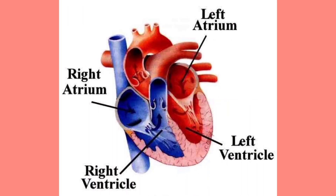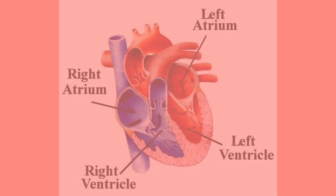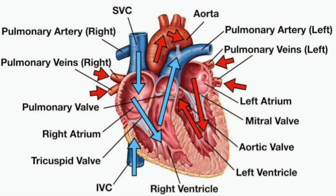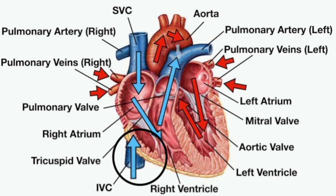The heart is made up of four chambers and can be functionally divided into the right heart, which consists of the right atrium and the right ventricle, and the left heart, which consists of the left atrium and the left ventricle. Both atria have pouch-like protrusions called the auricles, which can increase their capacity when needed. Poorly oxygenated blood from the body and other tissues enters the right atrium through the superior vena cava and the inferior vena cava.